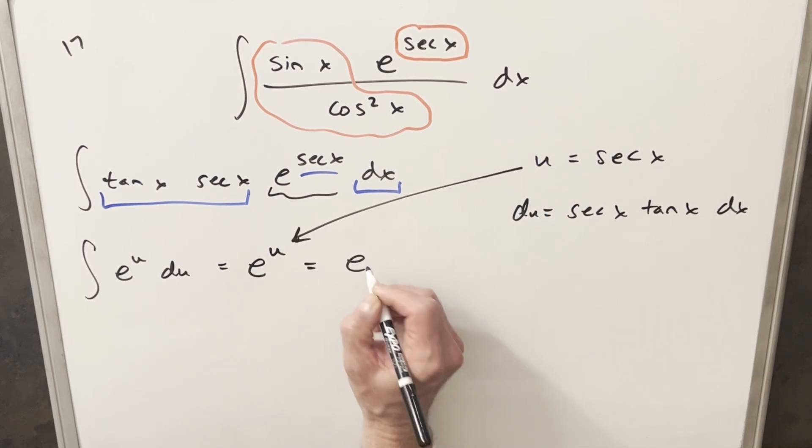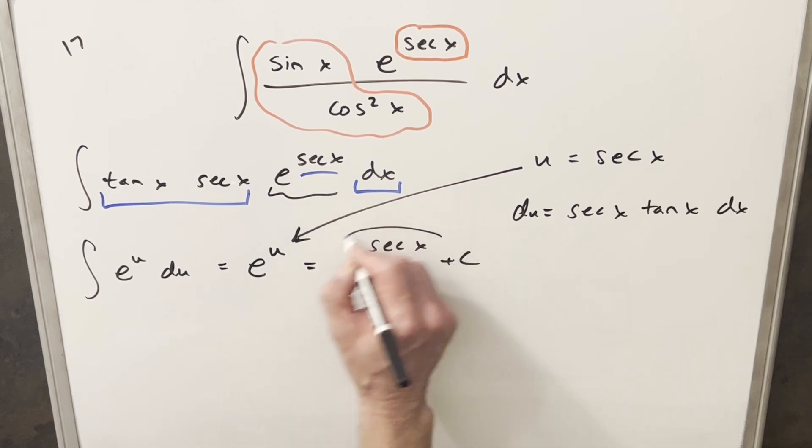So we're going to end up this thing, this piece here is going to be just e to the u and everything else is du. But integral of e to the u, that's just going to be e to the u. And so we just need to back substitute. And so for our final solution for this, we just have e to the secant x plus c. And that's it.